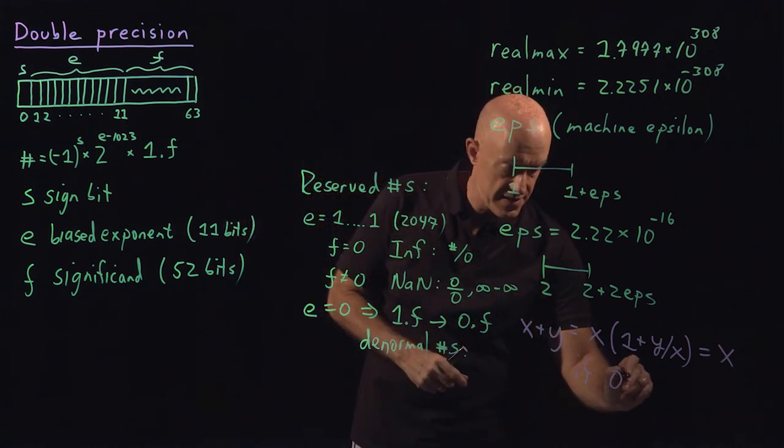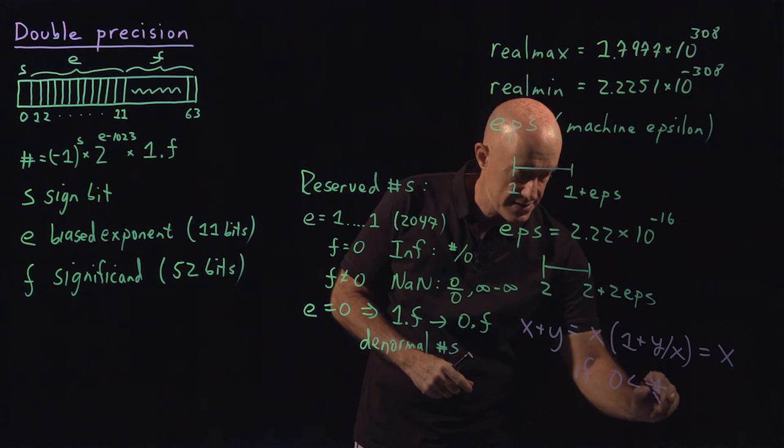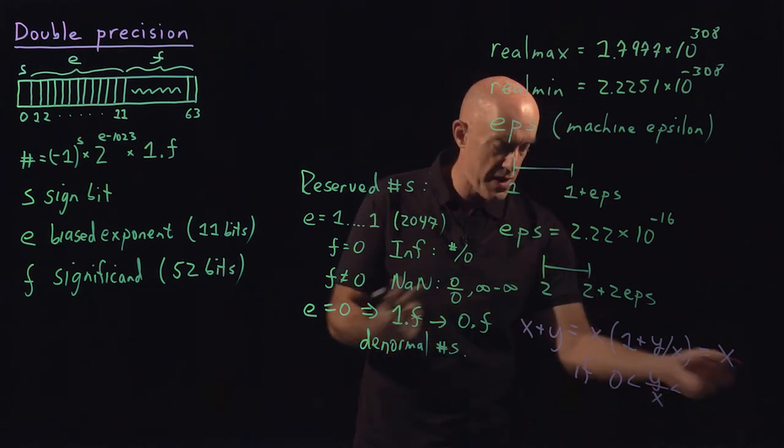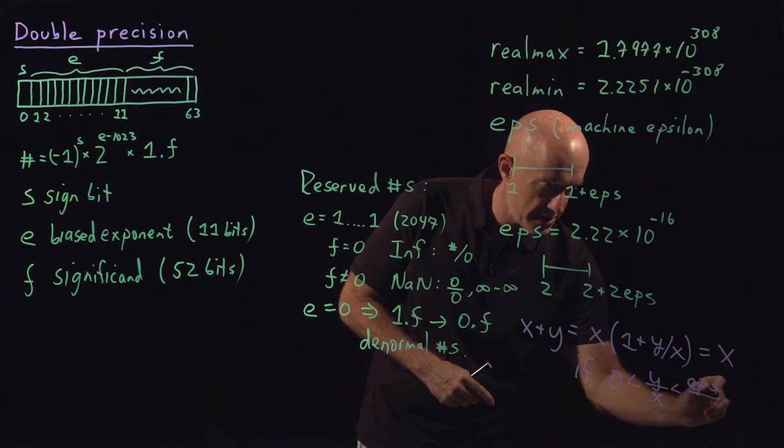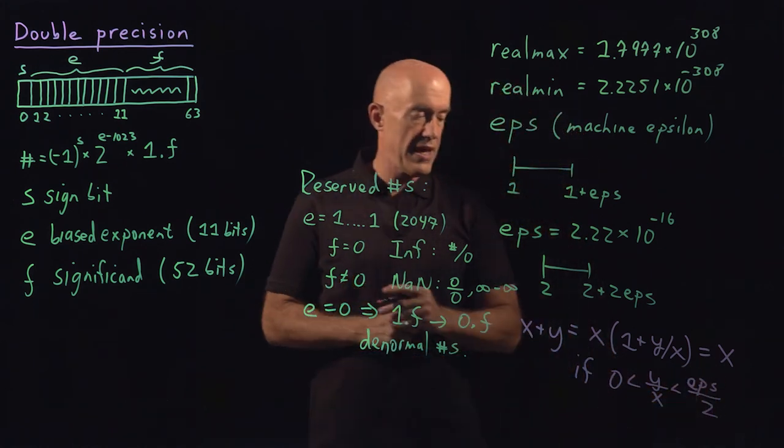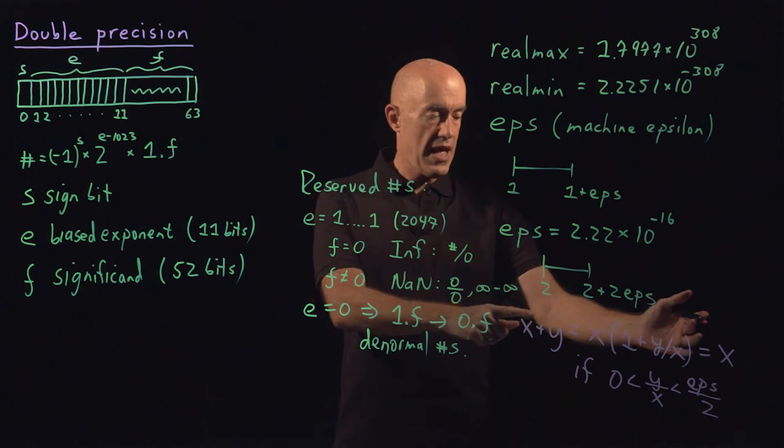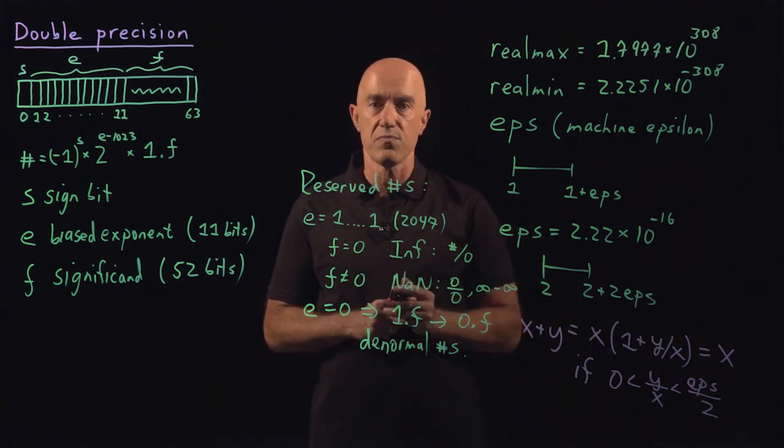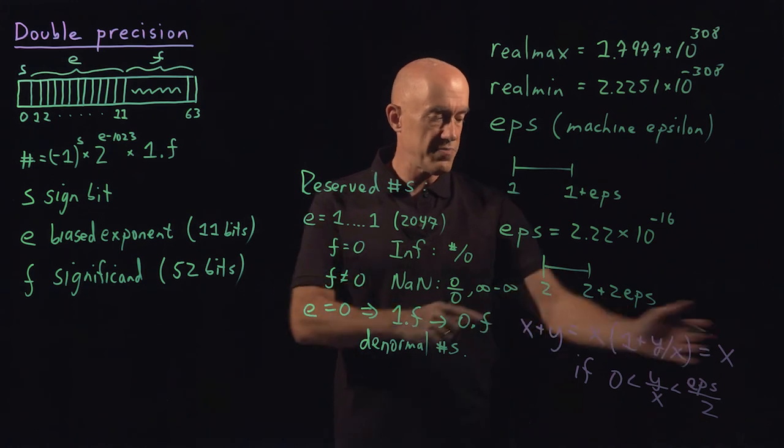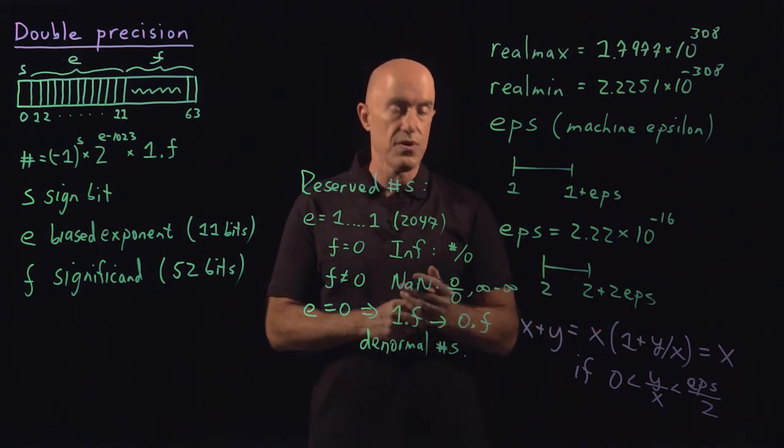But y over x then is smaller than, by rounding, smaller than machine epsilon over 2. And then you would just get 1 here, 1 plus y over x would be equal to 1. So x plus y would be equal to x.